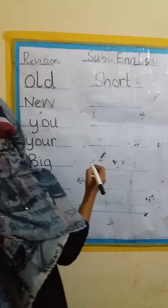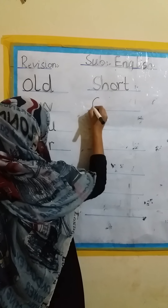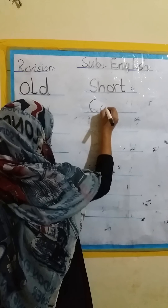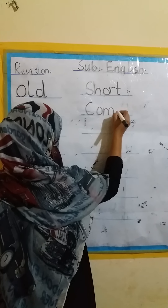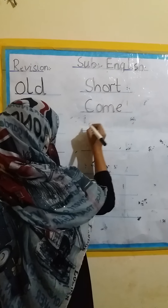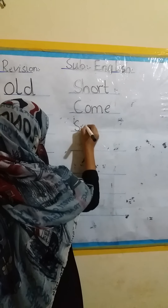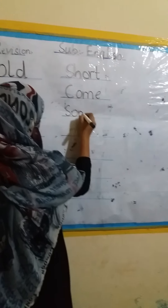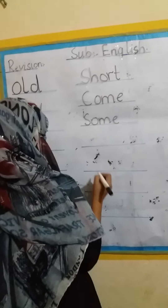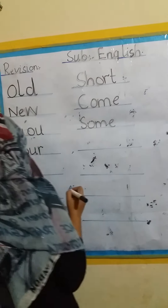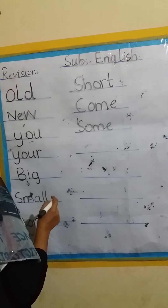After long and short: C, O, M, E — come. After come: S, O, M, E — some. Come and some.